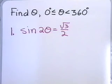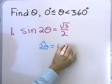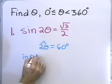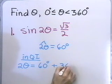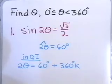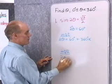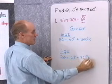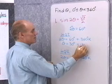Let's look at our first problem: sine 2 theta equals square root of 3 over 2. The reference angle for 2 theta is 60 degrees. Looking for solutions between 0 and 360: in quadrant 1, 2 theta equals 60 degrees plus 360 degrees times k. Since sine is also positive in quadrant 2, we get 2 theta equals 120 degrees plus 360 degrees times k. Dividing both sides by 2 gives theta equals 30 degrees plus 180 degrees times k, and theta equals 60 degrees plus 180 degrees times k.